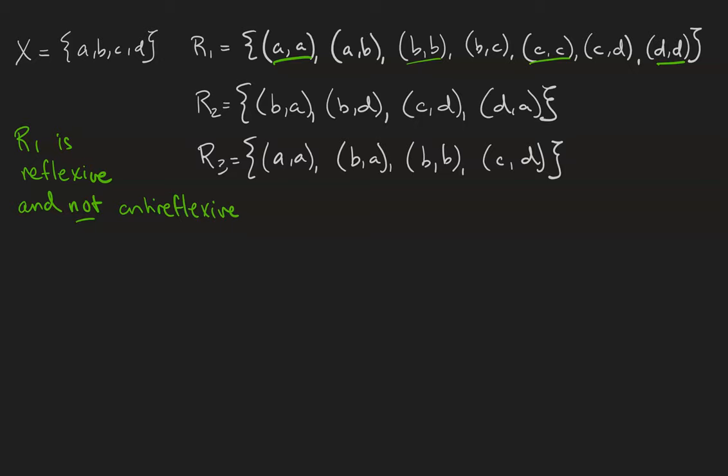The relation R2 relates B to A and to D, C to D, and D to A. R2 is antireflexive and not reflexive.